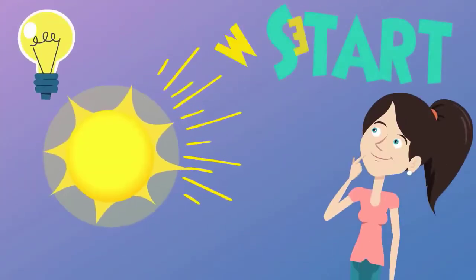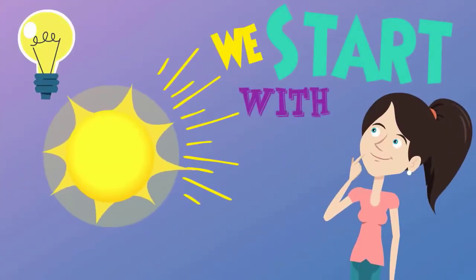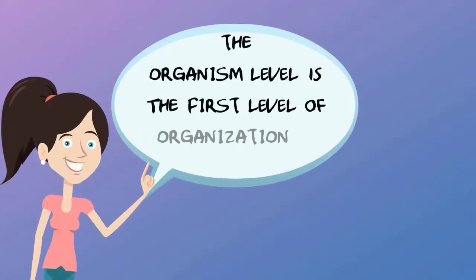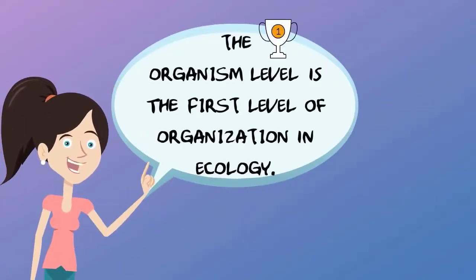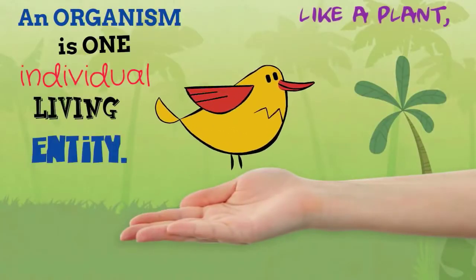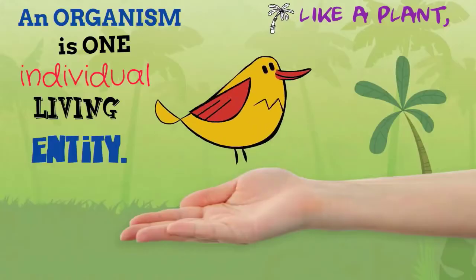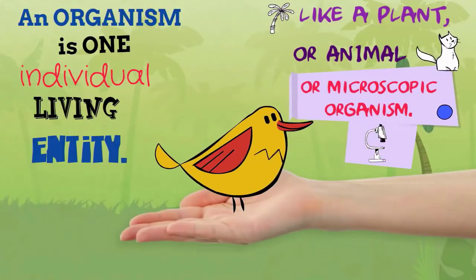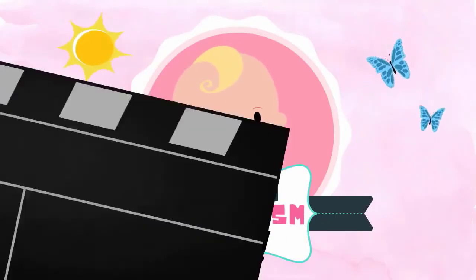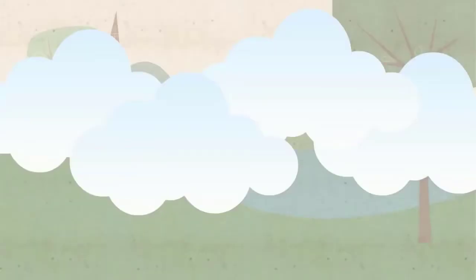We start with the organism. The organism is the lowest level of organization, which includes both unicellular and multicellular organisms. An organism is one individual living entity, like a plant, animal, or a microscopic organism. All living species in this level exhibit all the characteristics required for the existence of life.